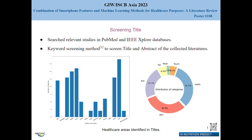We first searched for all relevant studies in PubMed and IEEE Xplore databases. We then screened the titles and abstracts using our own keyword screening method. For keyword screening, we used words related to the five senses such as eye, eyesight, voice, vocal, nasal, and so on, and determined the frequency of those words in the titles of the studies. As can be seen in the figure, we identified the distribution of healthcare areas in the titles, and the largest number of studies were related to eye, skin, and audio or voice.